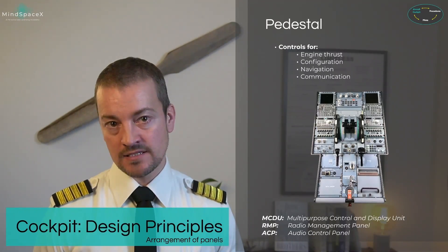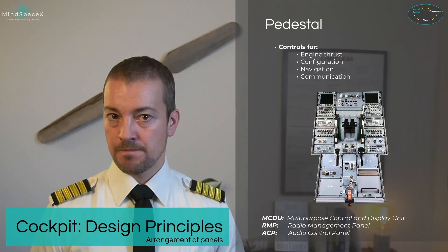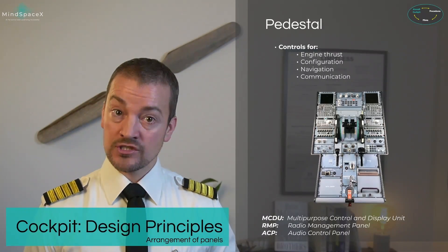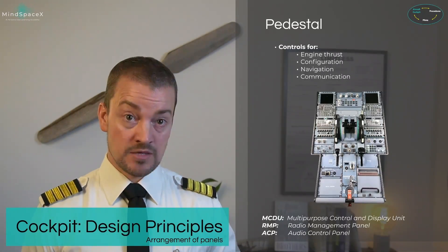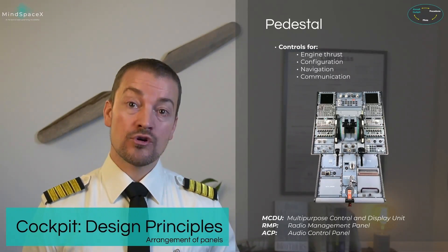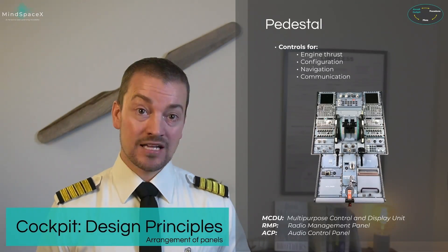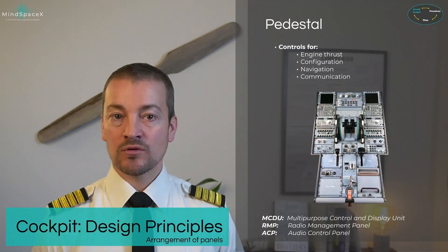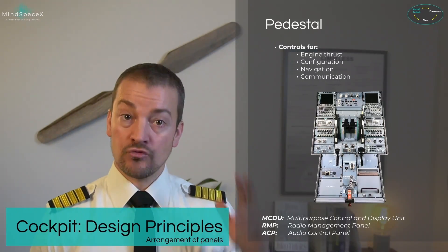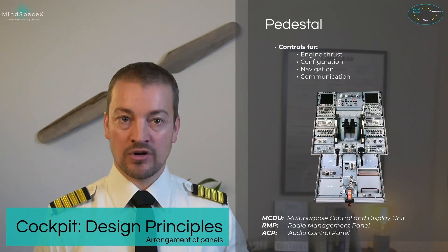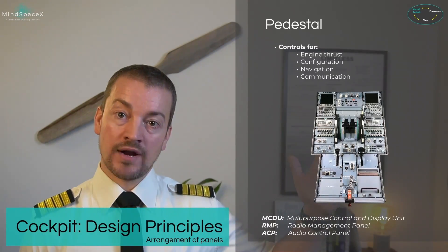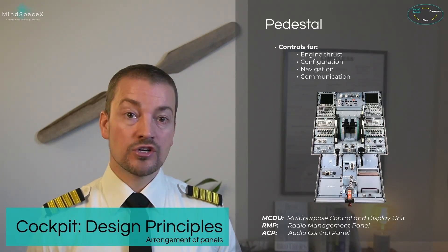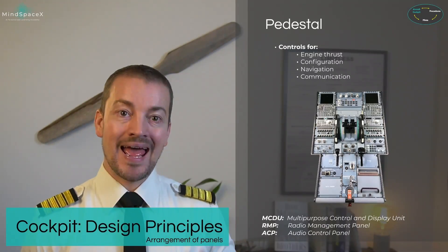It is not just an FMS system in this aircraft — it's a flight management and guidance system. The Multipurpose Control and Display Unit allows for tuning of navigational aids, identification of navigational aids, GPS information, as well as third-party interactions such as ATSU. The radio management panel found on the left and the right side allows the pilots to tune frequencies for radio communication as well as backup navigational aids.